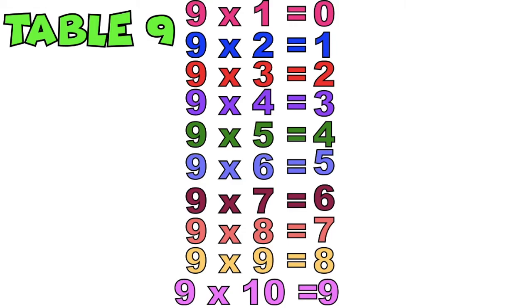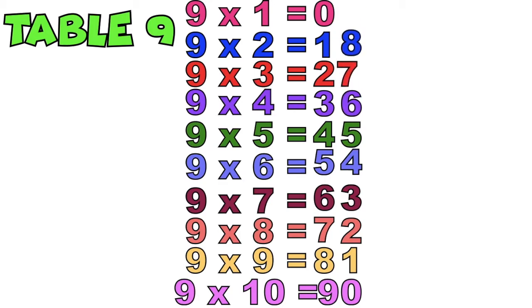Then, from the bottom, we're going to write 0 up to 9: 0, 1, 2, 3, 4, 5, 6, 7, 8, 9. This is multiplication table 9. 9 x 1 equals 9.